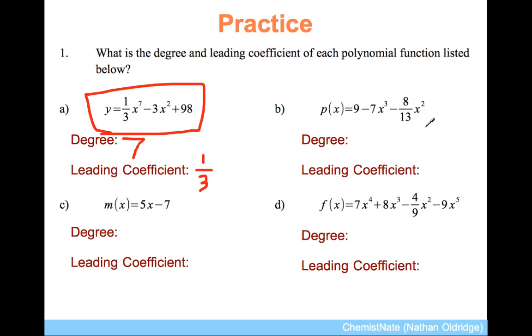Let's do a whole bunch more because they don't have to necessarily be written in order. This is a reminder that function notation exists. p of x is 9 minus 7x cubed minus 8 thirteenths of x squared. The degree is the highest exponent, that's 3. The leading coefficient is the number in front of the x with the highest exponent. That's negative 7.